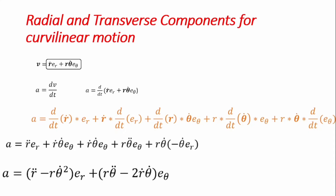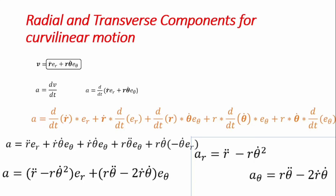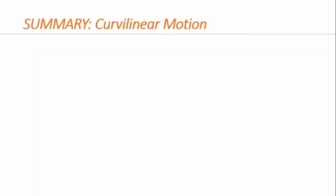The two components of acceleration for a particle undergoing curvilinear motion in radial and transverse components are: the radial component aᵣ = r̈ − r·θ̇², and the transverse component aθ = r·θ̈ + 2·ṙ·θ̇.